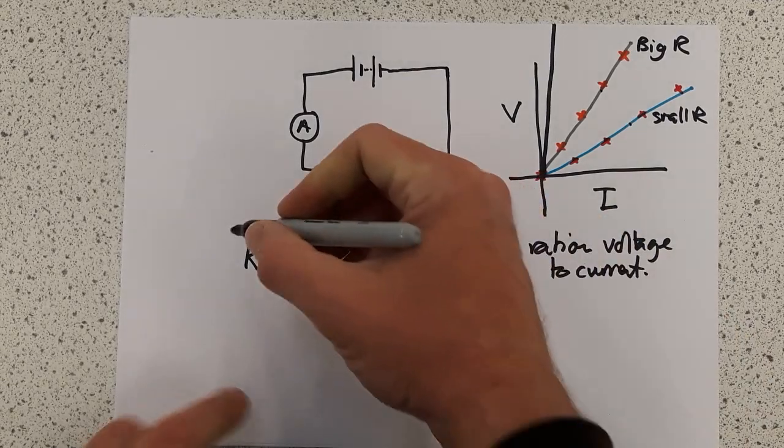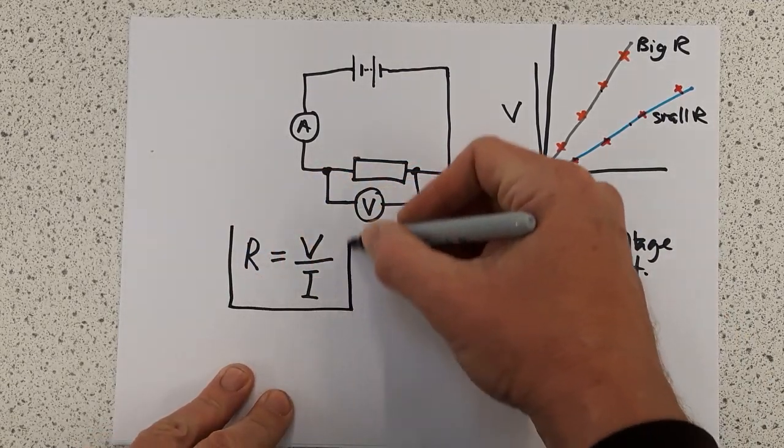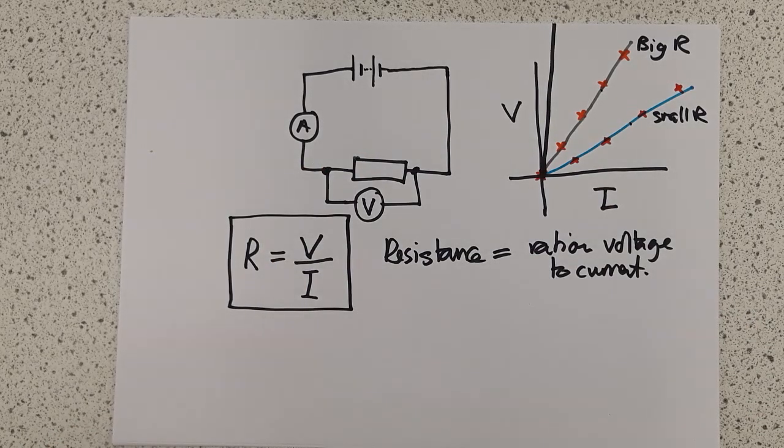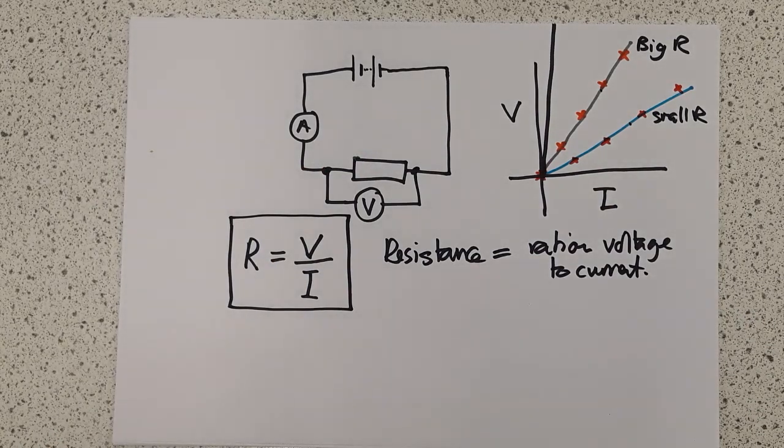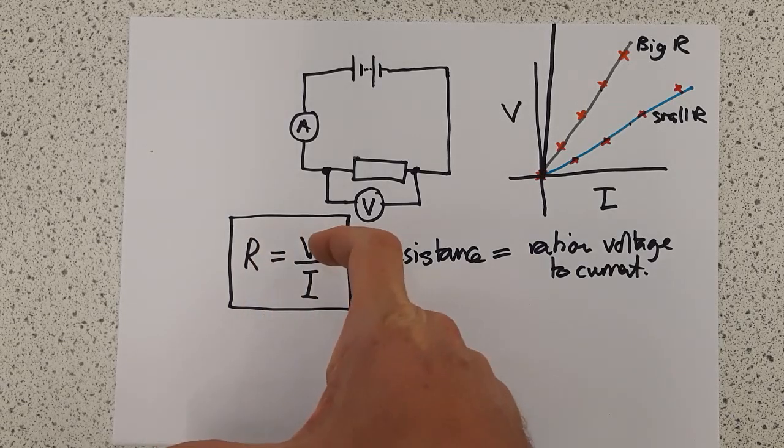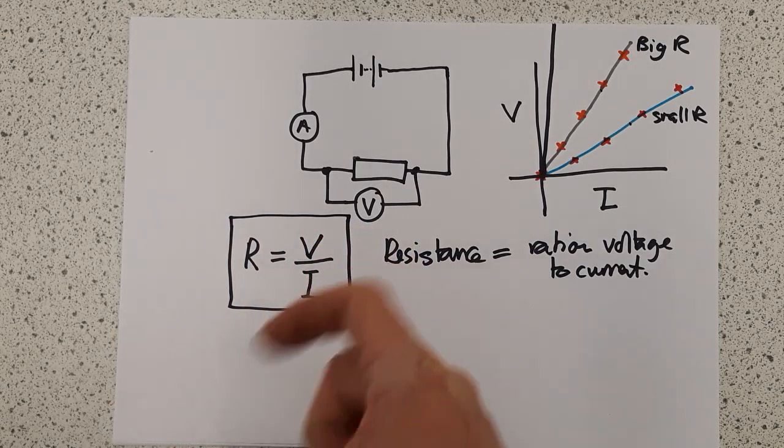Now this leads to the relationship which I've enshrined here. This is given to you in the exam. It's one of the few things I can ask you about in terms of calculations for this unit. So try and become familiar with that idea. Resistance is equal to the voltage divided by the current.